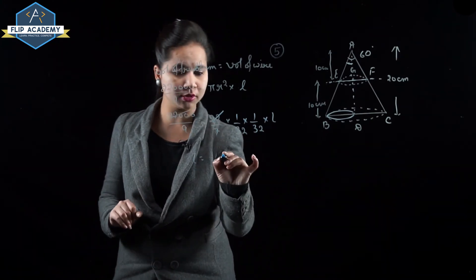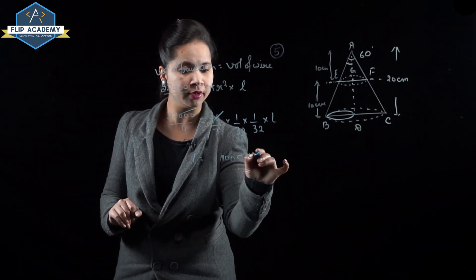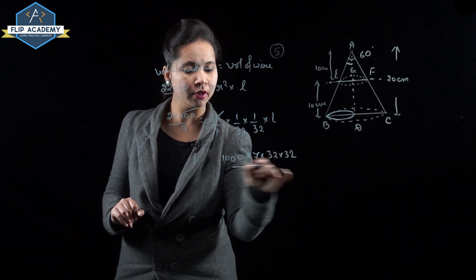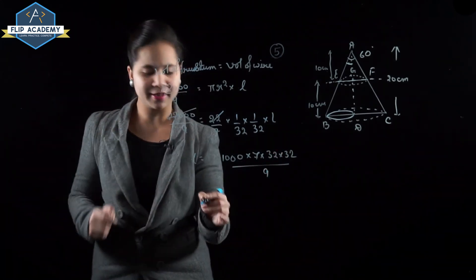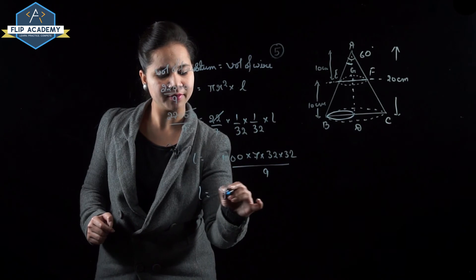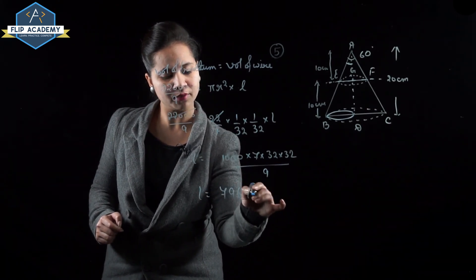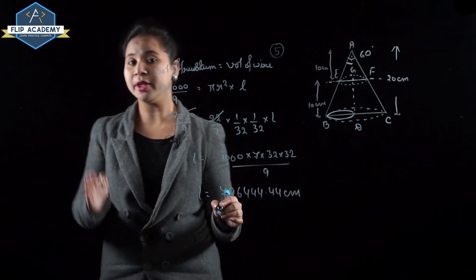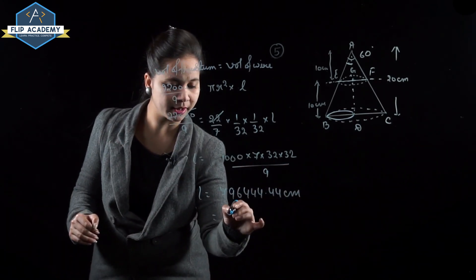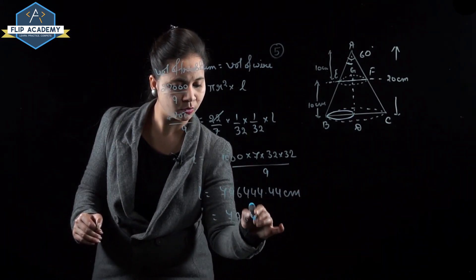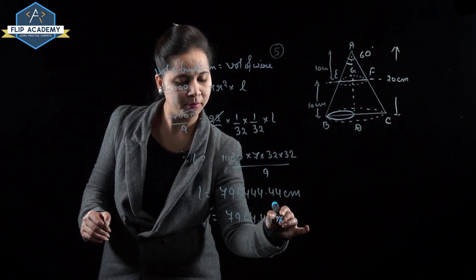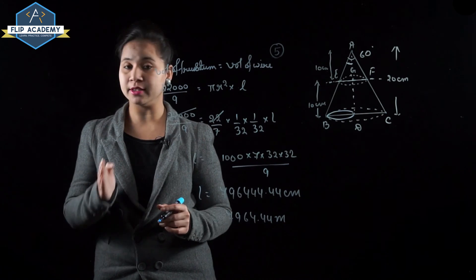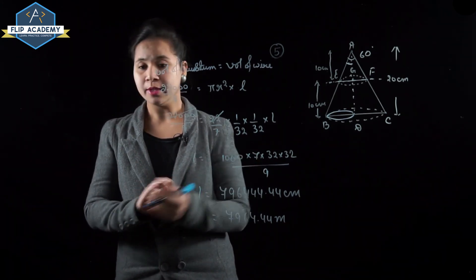Solving for L: L equals 1000 into 7 into 32 into 32 upon 9, which simplifies to 7,96,444.44 cm. Converting cm to meters gives 7,964.44 meters. So the length of the wire is 7,964.44 meters.